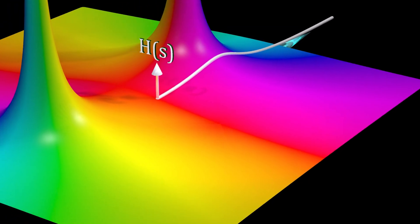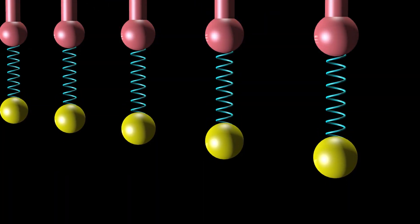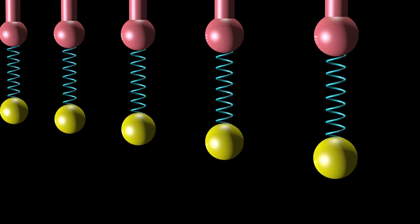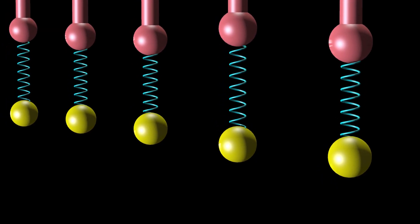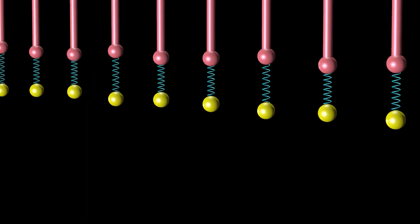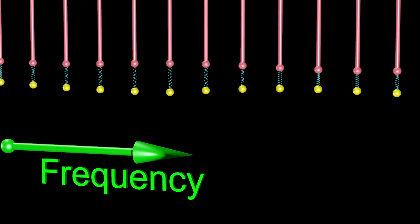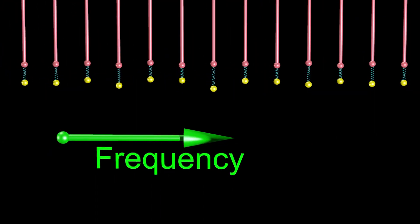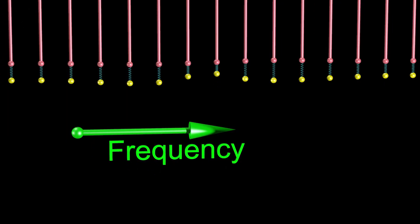To understand the behavior of any linear system, consider the following simple example. After all the initial oscillations expire, the output frequency of a linear system is always exactly equal to the input frequency, meaning that the frequency of each yellow sphere is exactly equal to the frequency of its corresponding red sphere. Although each red sphere has a different frequency, each red sphere moves up and down with the exact same amplitude.